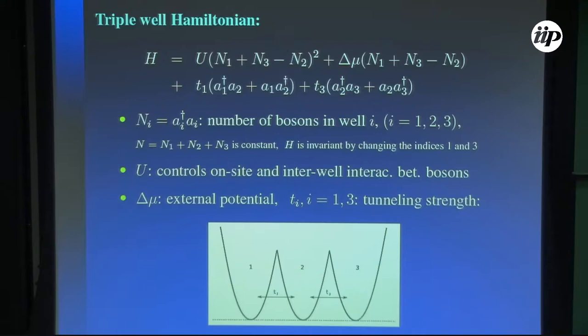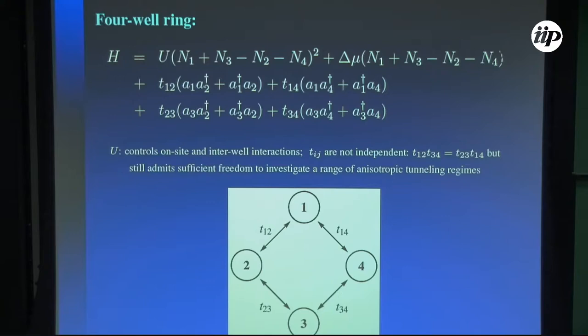We can also construct integrable four-well rings. With four wells — n1, n2, n3, n4 particles in each well — we again have the U controlling on-site and interwell interactions, and the T's controlling the tunneling between wells. Here the T's are not totally independent: there is a constraint that the product T1·T2 must equal T3·T4 to have integrability.